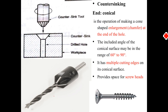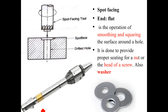The next operation, similar to counter boring and counter sinking, is spot facing. Spot facing is similar to counter boring but the dimensions are very small — we are just giving a spot at one end so that the head of screws, nuts, or washers can seat properly inside the workpiece. The end is flat. The operation involves smoothing and squaring the surface around one end of a hole to provide proper seating for nuts, screws, or washers. It is again a multi-point cutting tool operation.